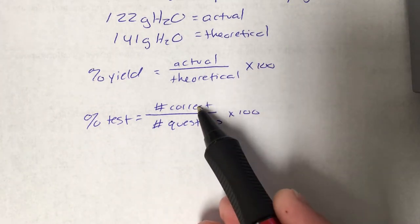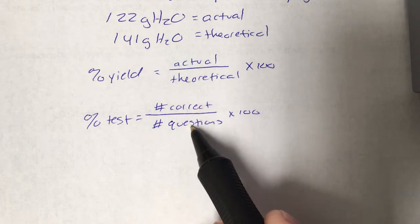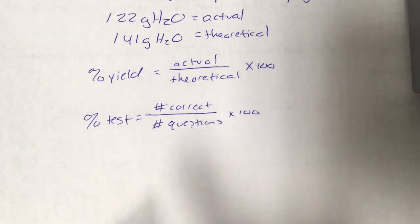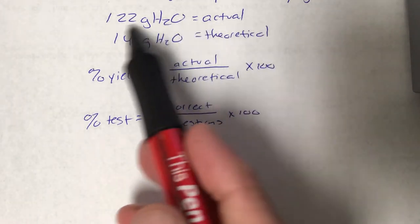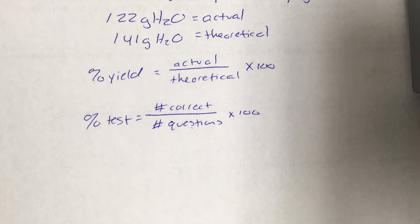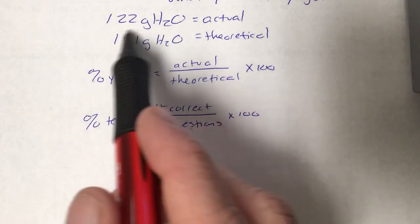Again, part - the number you got right - divided by whole - the total number of questions - times 100. This is the same thing, this is the same equation. This would be our whole. We shouldn't get more than that. I mean yeah, in school sometimes you get 105 percent on tests with bonuses and stuff like that, but in real world there is nothing more than 100 percent. You can't get more than 100 percent.